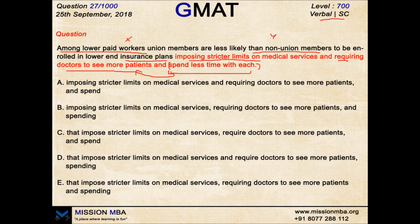The first two things are the causes driven by the insurance plans, and 'spending less time' is the effect achieved by those causes. Furthermore, you cannot keep all three things parallel, as in options B and C, which keep 'imposing,' 'requiring,' and 'spending' parallel — or 'impose,' 'require,' and 'spend' parallel. That would mean all three actions are done by the insurance plans — that is, the insurance plans are imposing stricter limits, requiring doctors to see more patients, and spending less time with each.